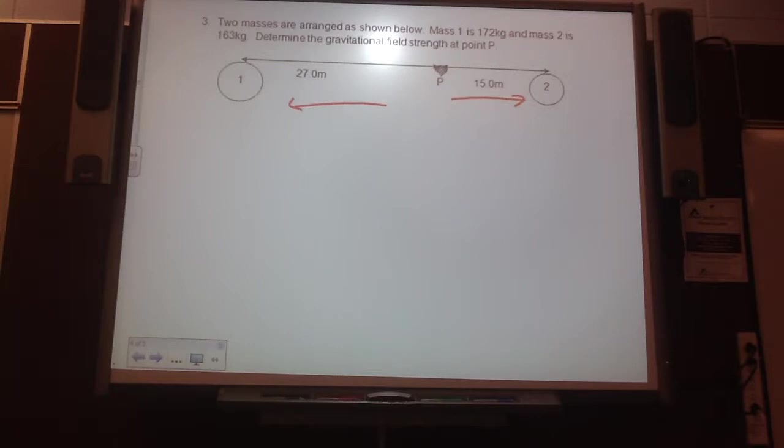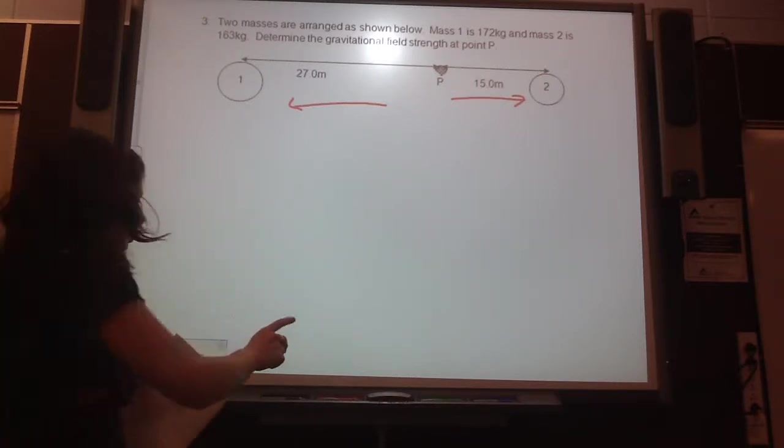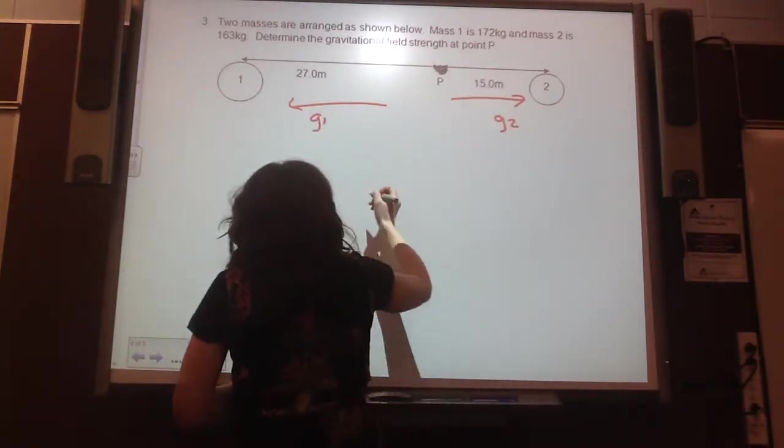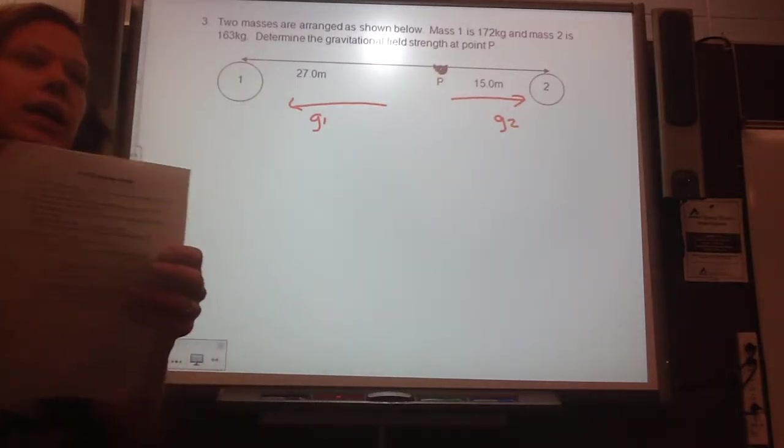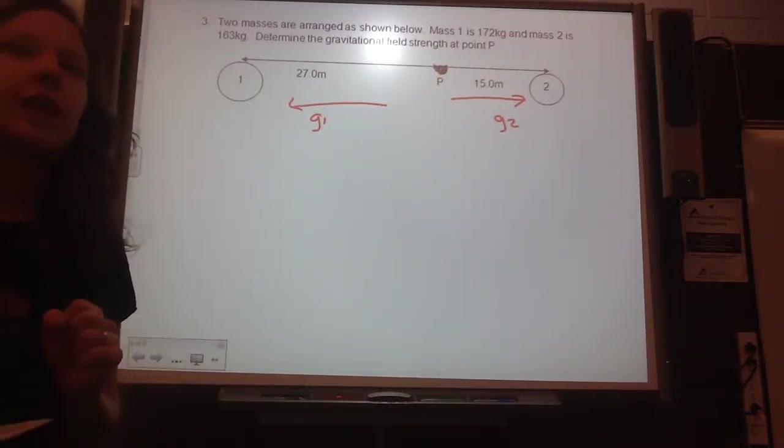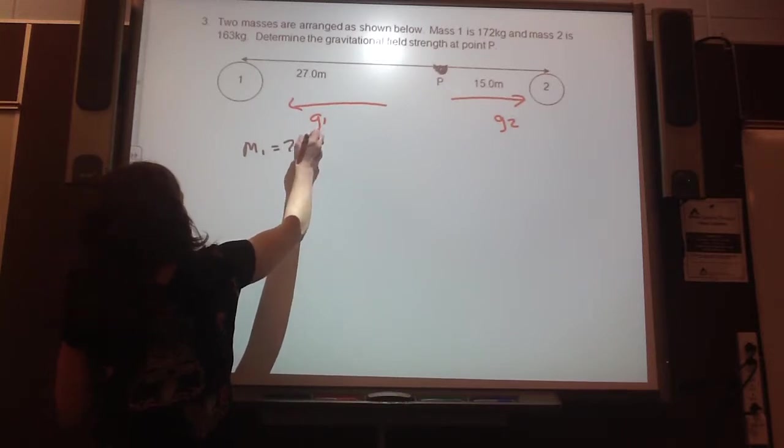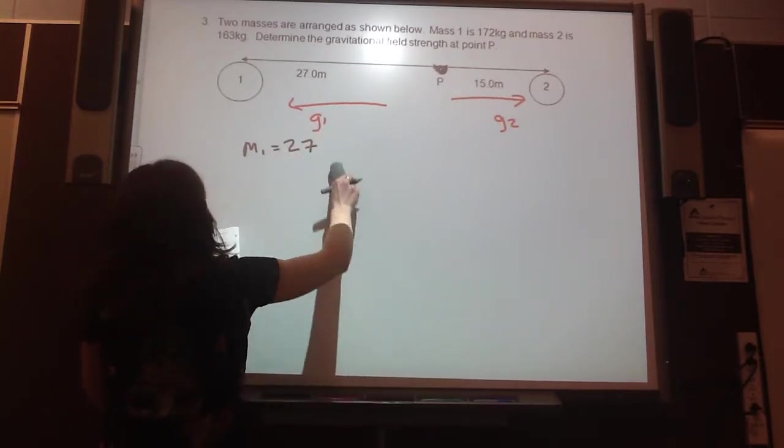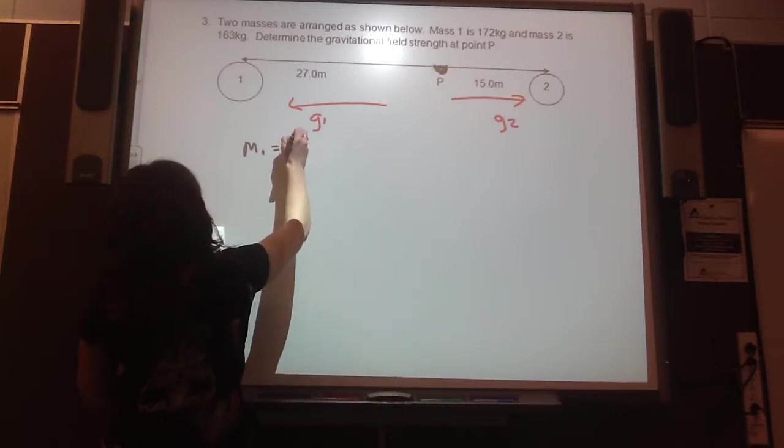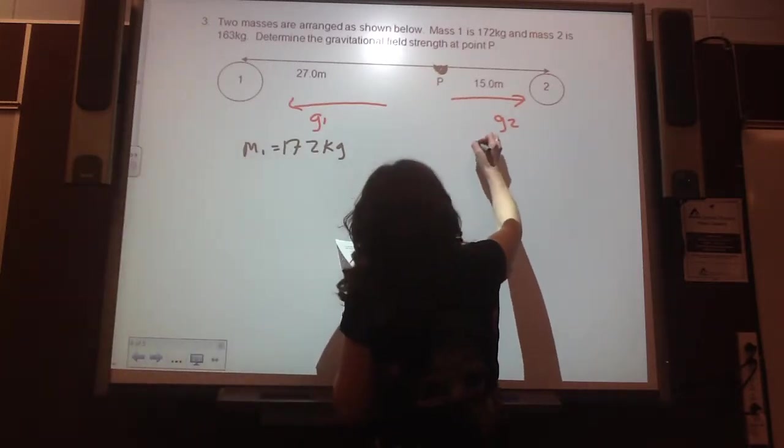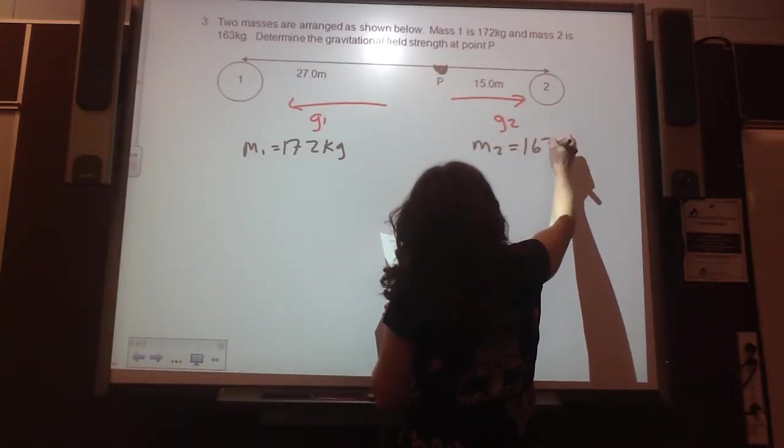If you don't want to listen, you could leave. Alright, so what we're going to do is we're going to say let's find G1 and let's find G2. And then depending on which one is bigger, I'll show you then later. So let's say mass 1 is 172 kilograms, and mass 2 is 163 kilograms.